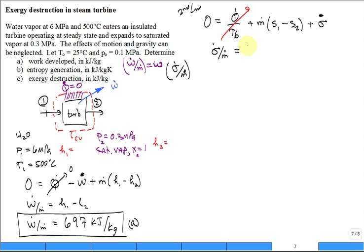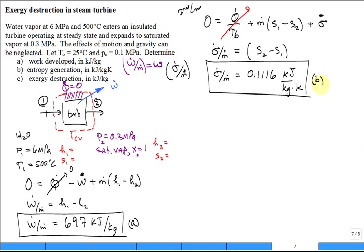So sigma dot divided by m dot equals s2 minus s1. You look up the properties s1 and s2 and substitute in. You find sigma dot divided by m dot numerically will be 0.1116 kilojoules per kilogram Kelvin. Nothing from Thermo 2, all earlier material.